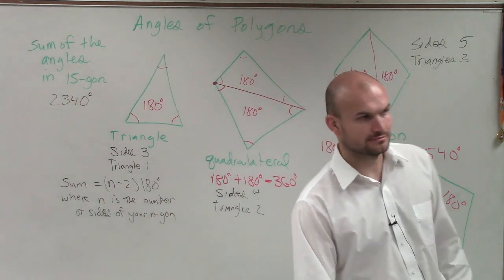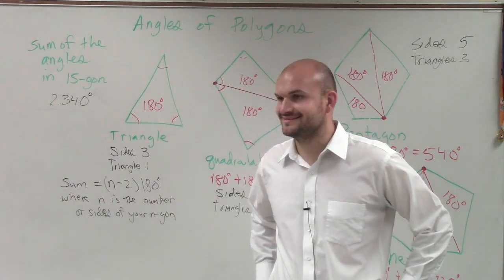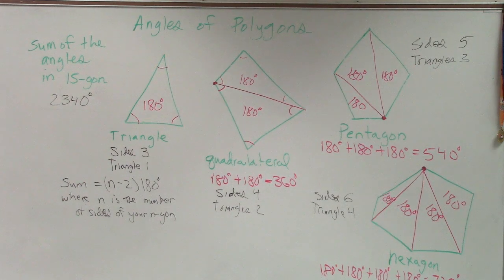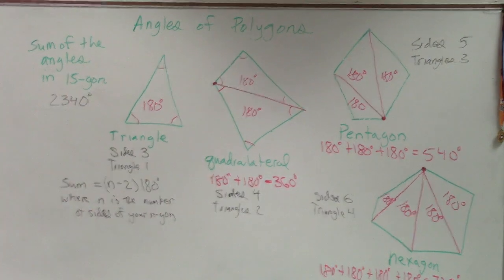So the sum of all the angles in a 15-gon is 2,340 degrees. Cool? Exciting? Good. Guys, make sure you guys have all that written done. This is New Notes.